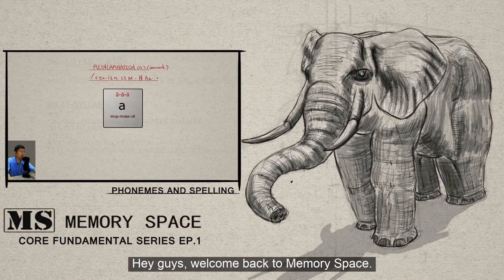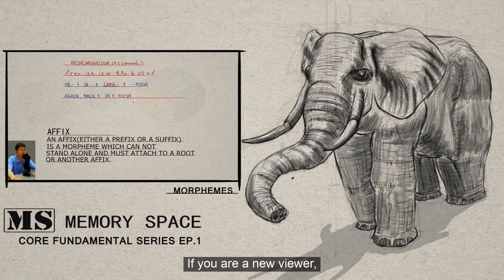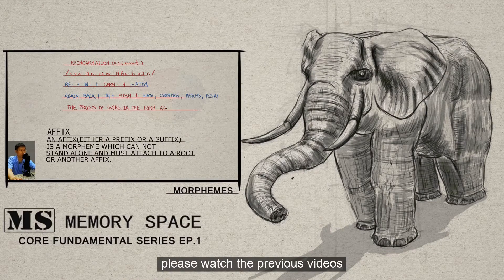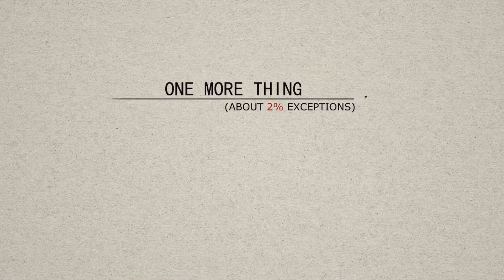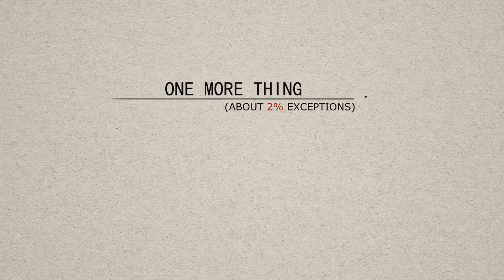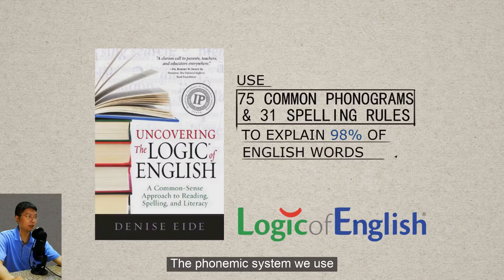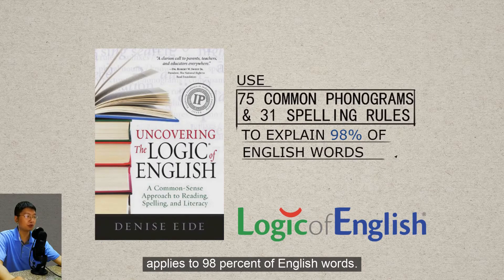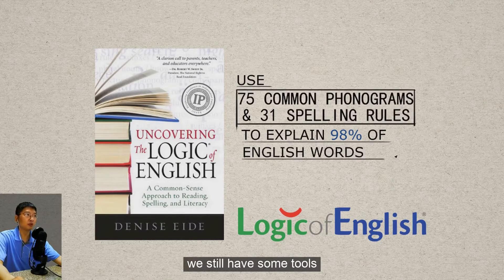Hey guys, welcome back to Memory Space. This is Frail speaking. If you are a new viewer, please watch the previous videos before watching this one. And there's one more thing you should keep in mind. How about those 2% of exceptions? The phonics system we use applies to 98% of English words.